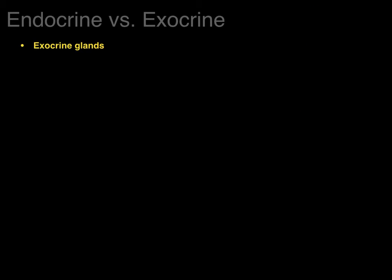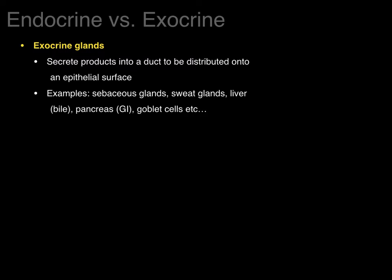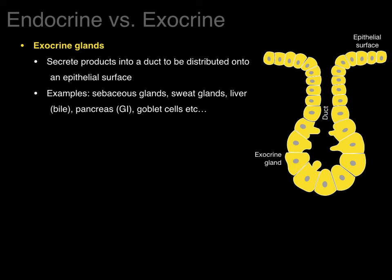In contrast, an exocrine gland secretes its product into a duct to be distributed onto an epithelial surface. Examples are sebaceous and sweat glands, liver, pancreas, and goblet cells. Each circle in the diagram represents an exocrine cell, with a duct going up to an epithelial surface. In this case, sweat or water is being produced and the secretions go to bathe an epithelial surface.